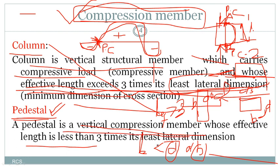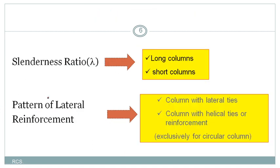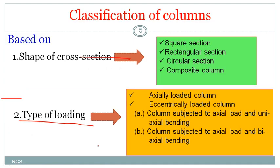These are the basic differences between column and pedestal as compression members used in RCC construction. Columns are classified based on various parameters: shape of cross-section, type of loading, slenderness ratio, and pattern of lateral reinforcement.